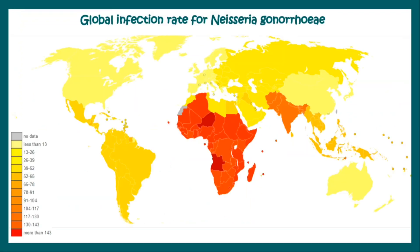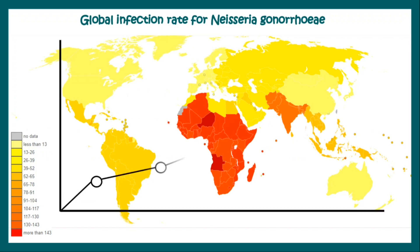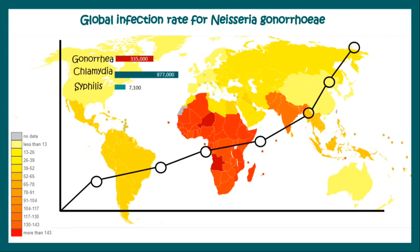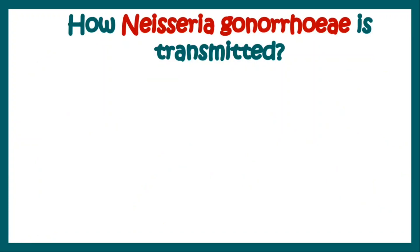Neisseria infection is increasing with every passing year. This graph shows the global infection rate of Neisseria gonorrhoeae, and as you can clearly see, the South Asian countries like India, Pakistan, Afghanistan, and the entire African continent are the worst affected.